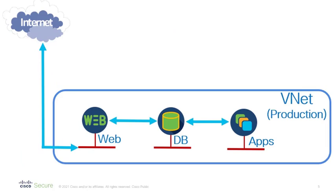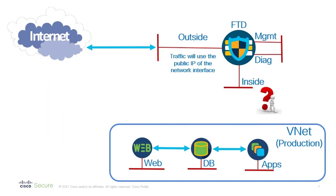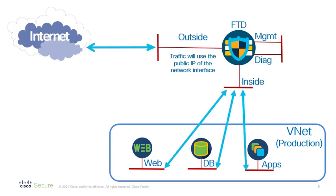We're going to focus on the FTD. We have a data center with three subnets in a VNet — a very simple example — connecting to the internet. The question is where do we put our firewall? We have a management and diagnostic network, which is a separate part of the deployment, but we also have an inside and outside network. The internet connects to the outside network, but how do we connect the inside of our firewall to our production subnets? We need to get traffic from those subnets to the firewall. We could put the firewall on one of those subnets, but that introduces an asymmetry. It's best to keep the inside subnet separate.